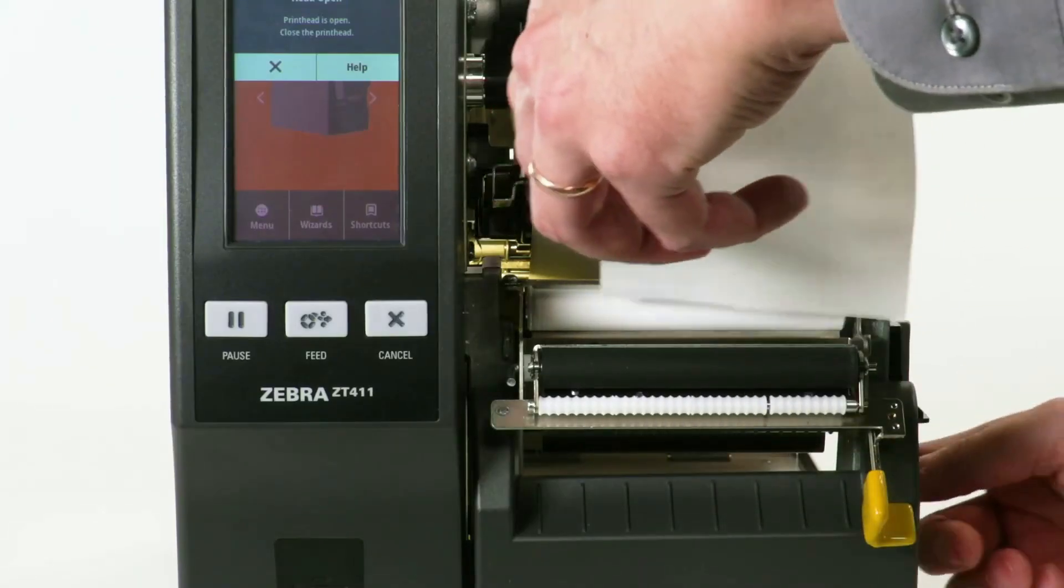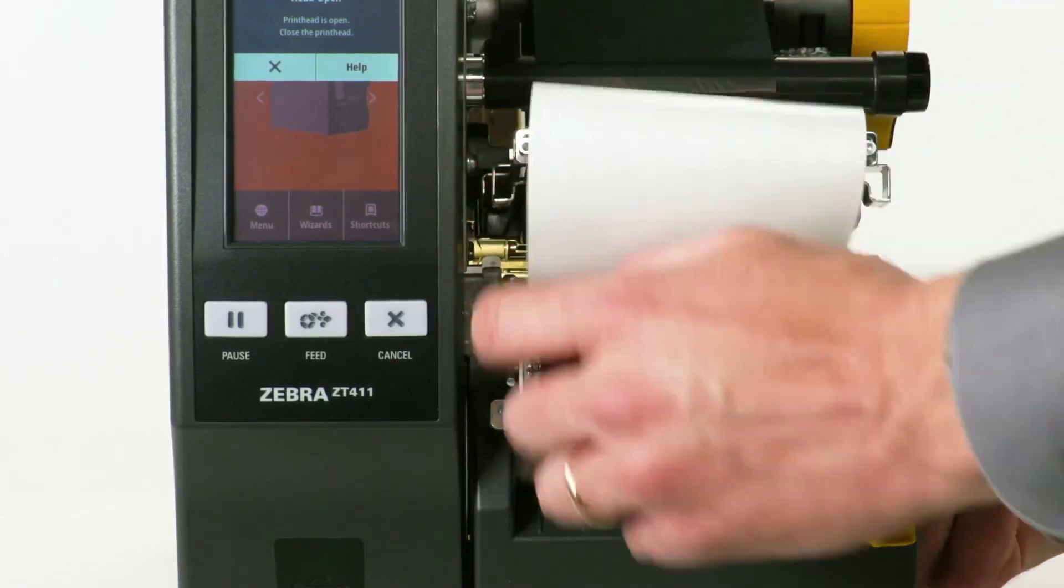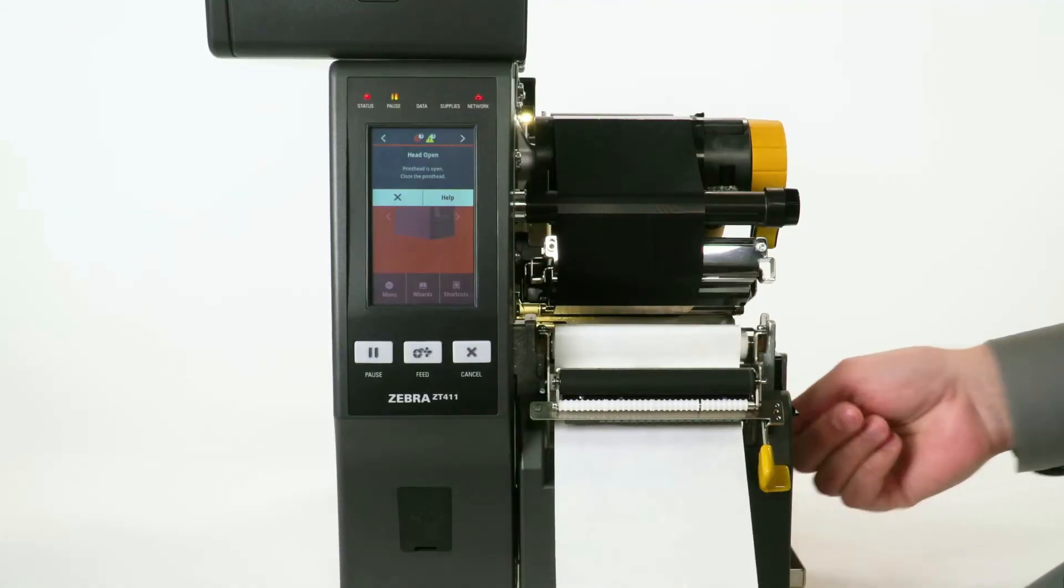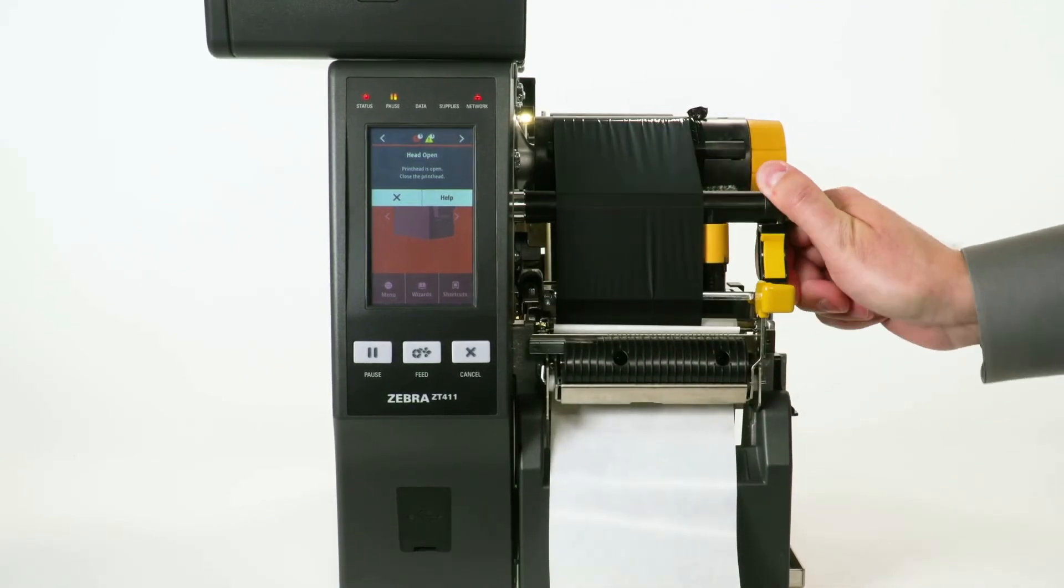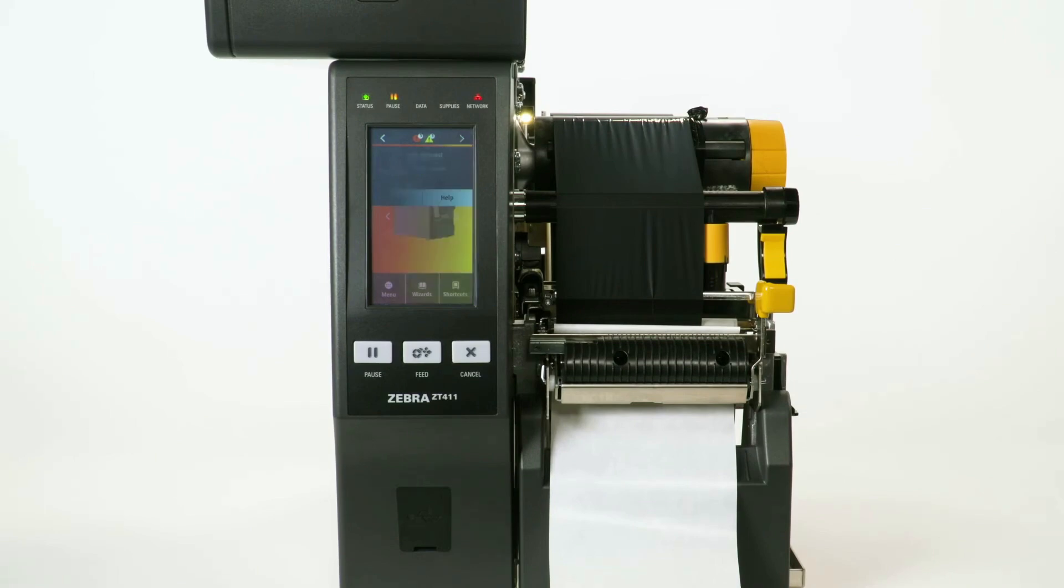Feed the liner into the peel assembly and out the bottom front. Close the peel assembly. Close the printhead. Press the pause button.